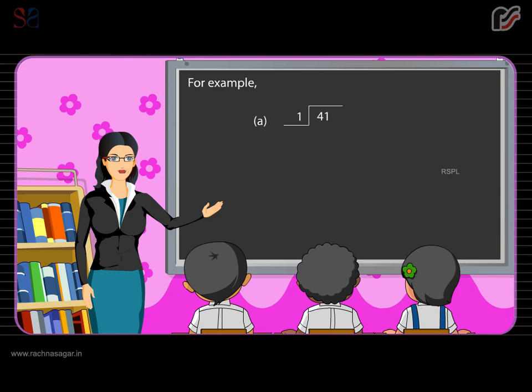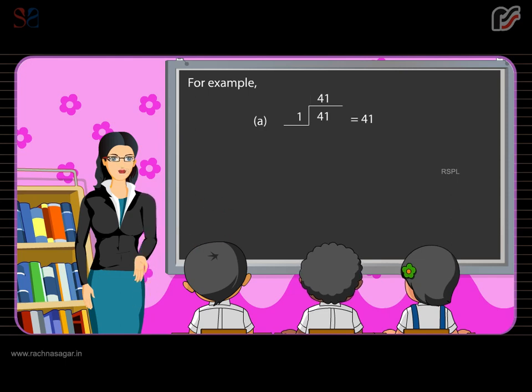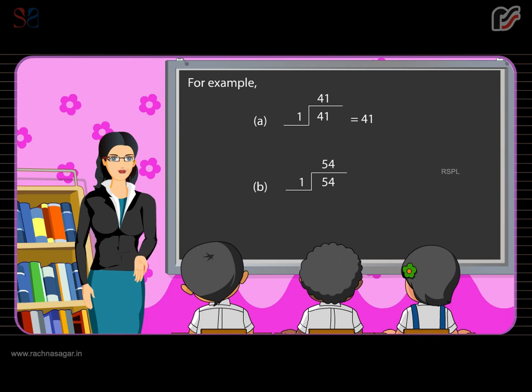For example, 41 divided by 1 is equal to 41. 54 divided by 1 is equal to 54.